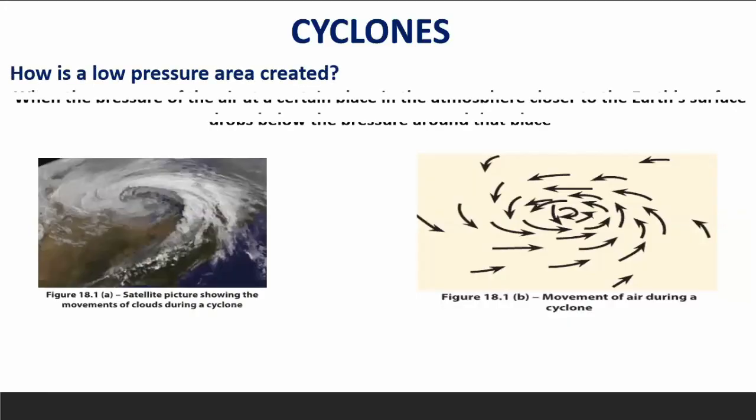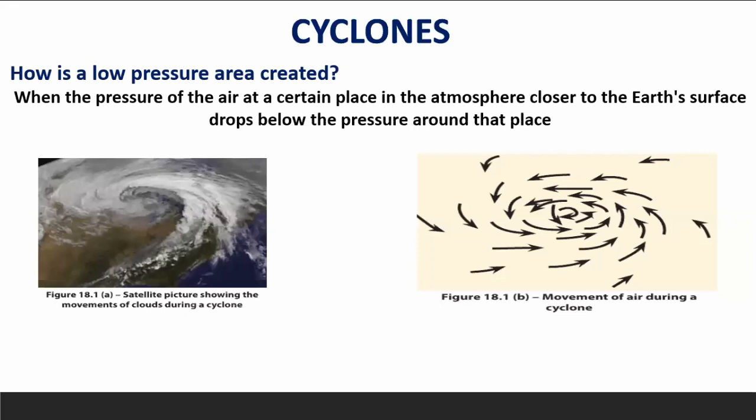Cyclones. When the pressure of the air at a certain place in the atmosphere closer to the earth's surface drops below the pressure around that place, a low pressure area is created. If this low pressure situation develops further, it becomes a depression in the atmosphere. If this situation develops further, it gives rise to a cyclone.